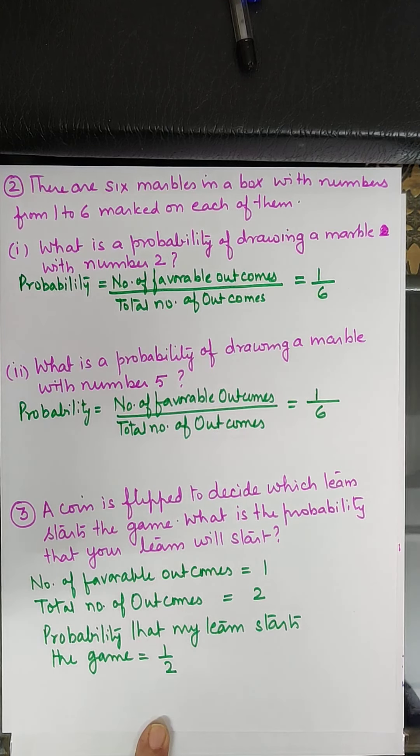Now the third part: 'A die when tossed shall land up with 8 on the top.' A standard die has faces numbered 1 to 6, so it can never land on 8. This is impossible.